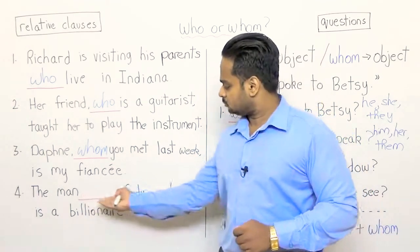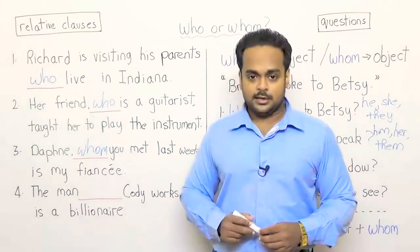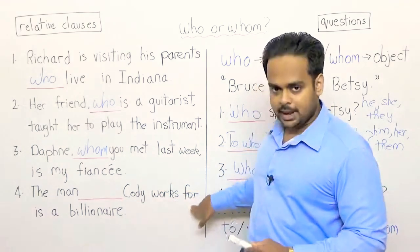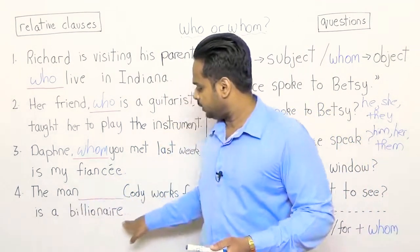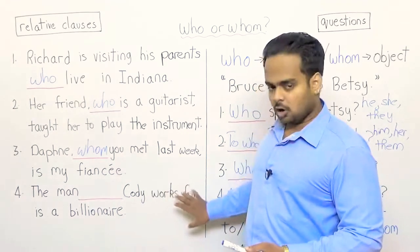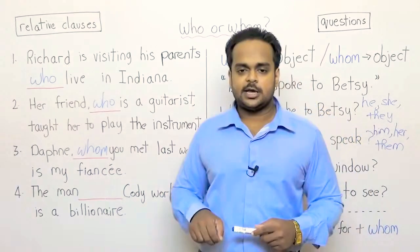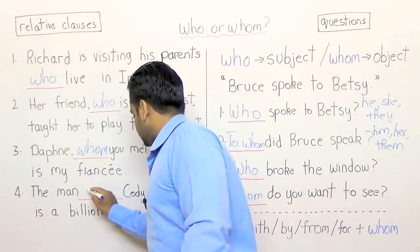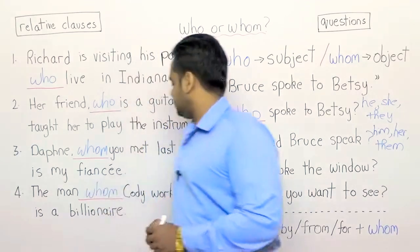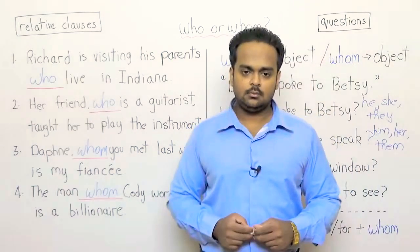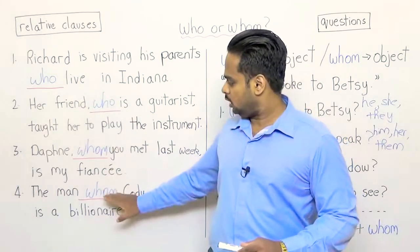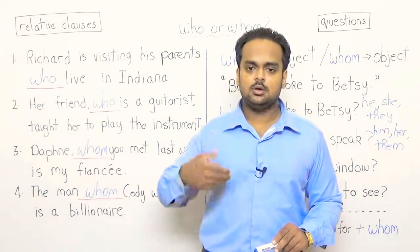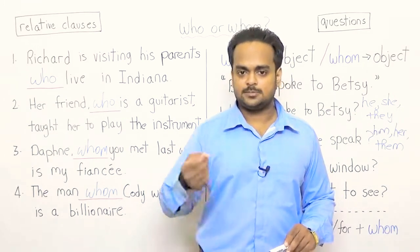In the last example: the man blank Cody works for is a billionaire. The first clause is: Cody works for a man, and the second clause is: the man is a billionaire. We're interested in the first clause. Can you say Cody works for he or Cody works for him? Cody works for him is correct, so because we have an M we need a whom — the man whom Cody works for is a billionaire. Just remember, if you are not sure whether to use who or whom, just use who and you will be fine. Of course, using whom correctly makes your language sound more formal and more grammatically correct, which is important especially in writing.